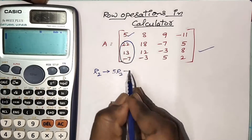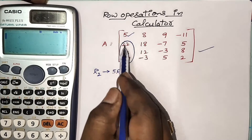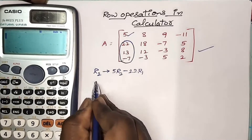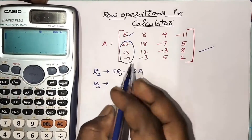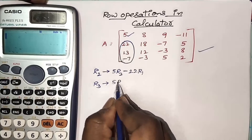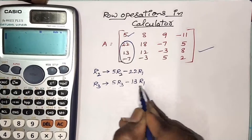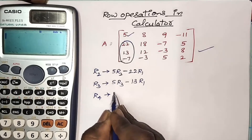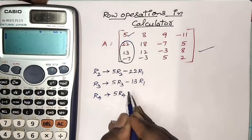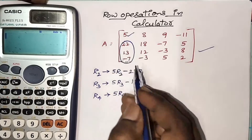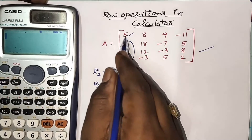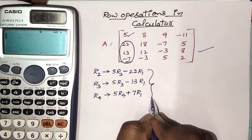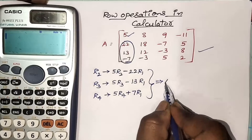Minus — now multiply the first row with 22. In a similar way, the third row becomes R3 implies 5R3 minus 13R1. R4 implies 5R4 — since this element is negative 7, you will get minus of minus plus, multiply this term with 7, so you will get plus 7R1.